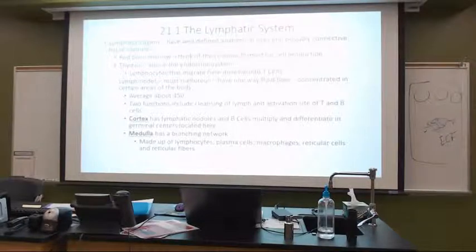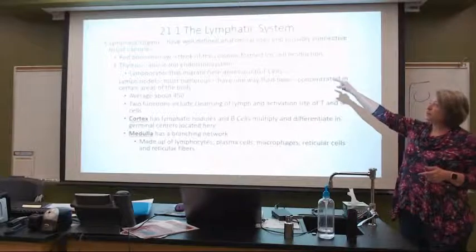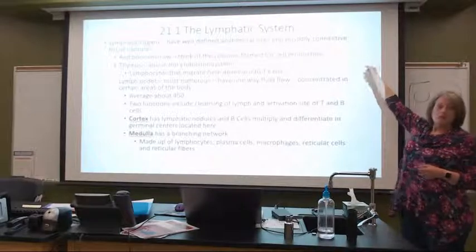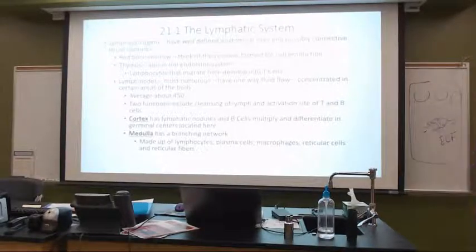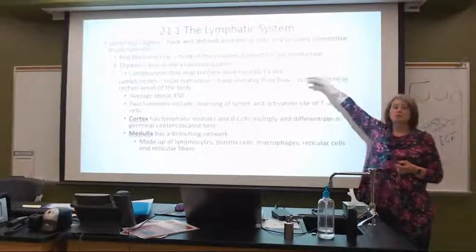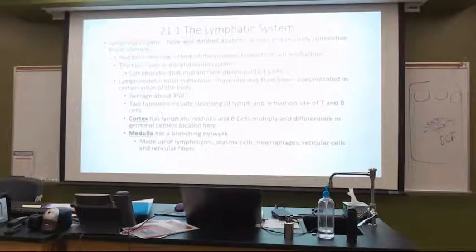Lymphatic organs have a very well-defined anatomical site and most have connective tissue capsules — i.e., lymph nodes and spleen. Our red bone marrow is part of this system because of those colony-forming units that give rise to red blood cells, lymphocytes, monocytes, and all that sort of stuff. We need that.